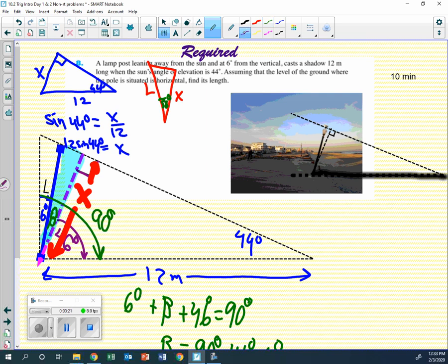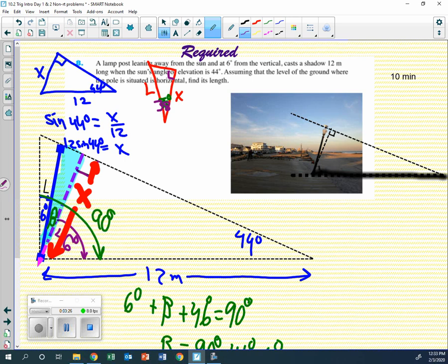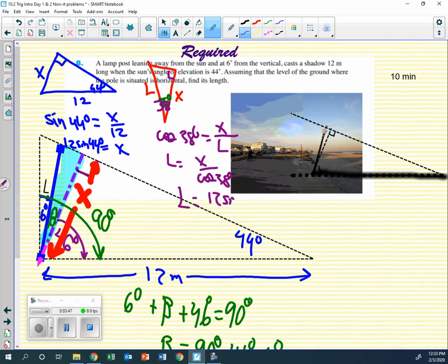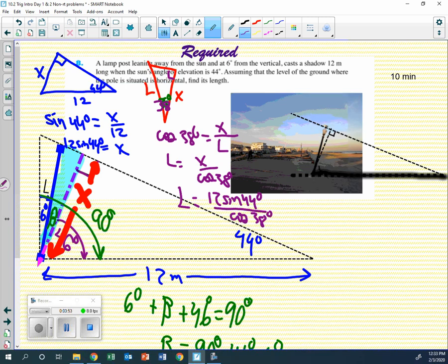And now I can say, all right, here's a right angle. Here's 38 degrees. Now the cosine of 38 is going to be adjacent, which is x over l. And of course, l is going to be x over the cosine of 38. And we already said that x was 12 times the sine of 44 over the cosine of 38. Or you can just calculate as you go. Either one is fine.